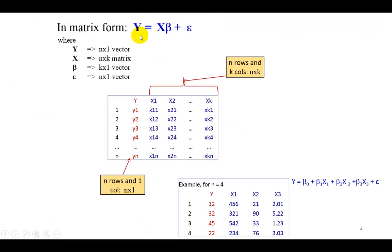Now, the multiple regression model can also be represented in matrix form, as I show here. So Y is an N by 1 vector, X is an N by K matrix, β the coefficient is a K by 1 vector, and the error term is an N by 1 vector.